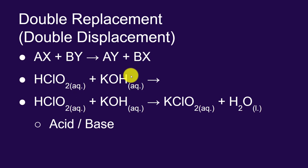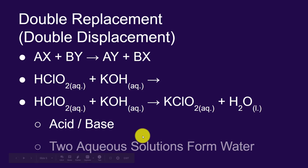This type of double replacement reaction is referred to as an acid-base reaction. We have the chlorous acid reacting with potassium hydroxide, which is a base. And in these reactions, you're going to start with two aqueous solutions, just like we did with the precipitation reactions.